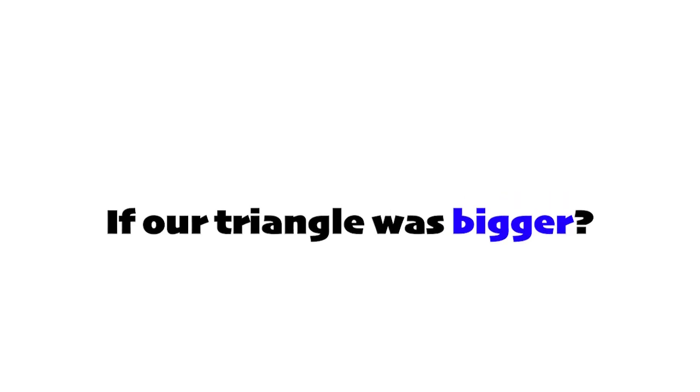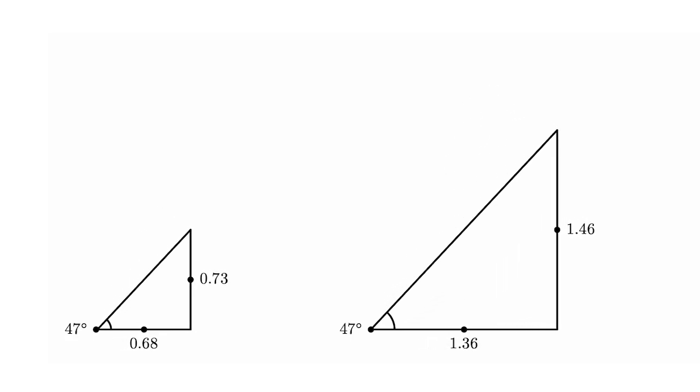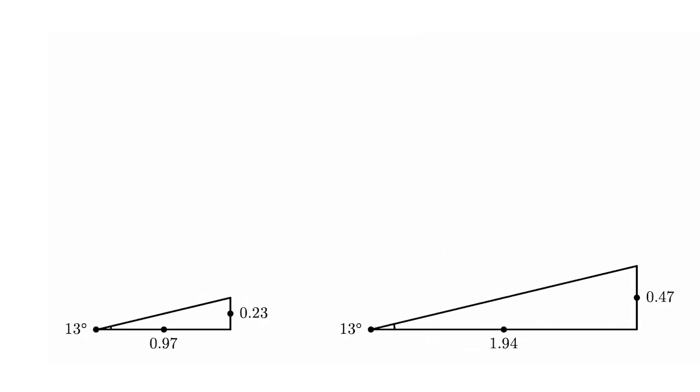But what would happen if our triangle was bigger? Let's observe a triangle twice as big. Do you notice that the proportions of the sides are the same as you increase the angle?